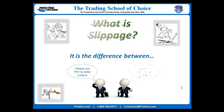Slippage is the difference between the price where you try to enter your position and the price at which you actually get filled. Slippage occurs very simply because you are trying to buy more shares than what are available at that moment. Remember that what is available may be being decreased by someone else at the exact same moment. The same is true when you are trying to sell more shares than someone is willing to buy at that price at that moment.